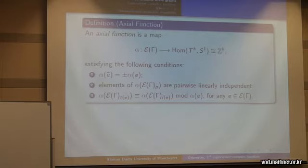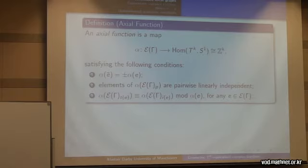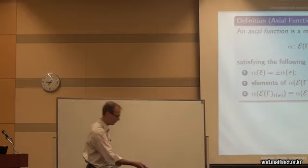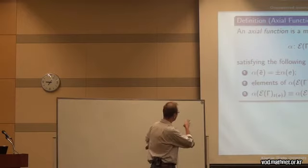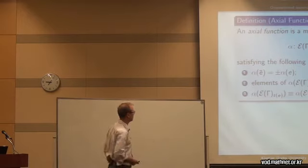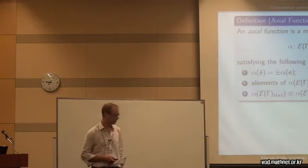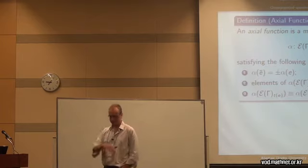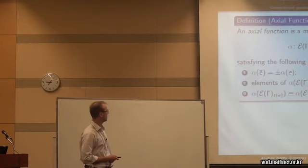The first condition is that α(ē) — ē being e with the opposite orientation — equals plus or minus α(e). This is the condition why we're calling these generalised GKM graphs, because usually in a GKM graph we ask that α(ē) equals minus α(e), as Shintaro spoke about yesterday. That's because originally the theory is used to study almost complex structures; since we want to study stably complex structures, it's a wider class of objects so we need a slightly weaker condition. The second condition is that the elements are pairwise linearly independent.